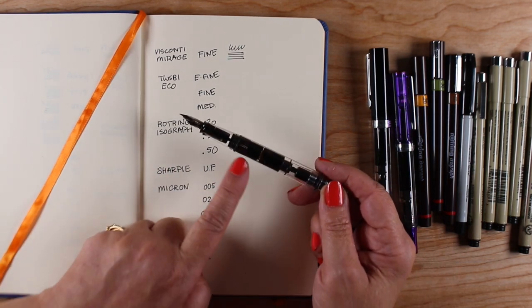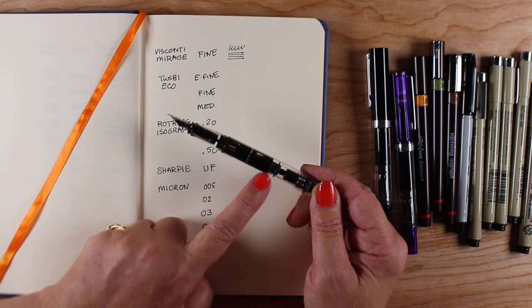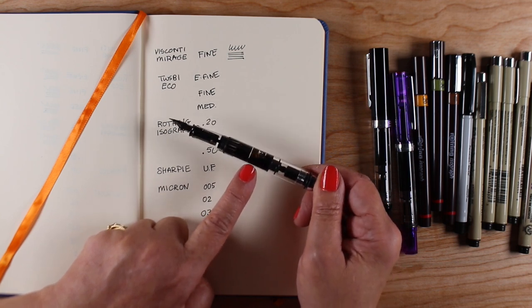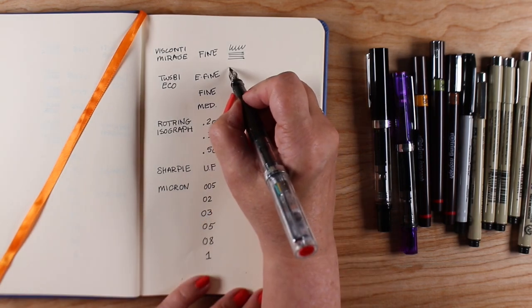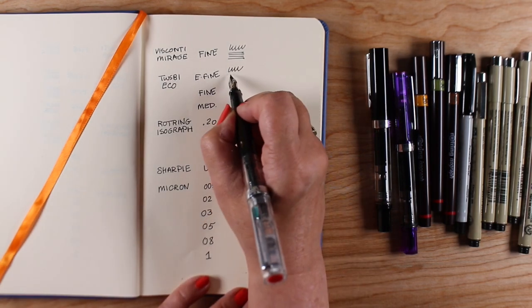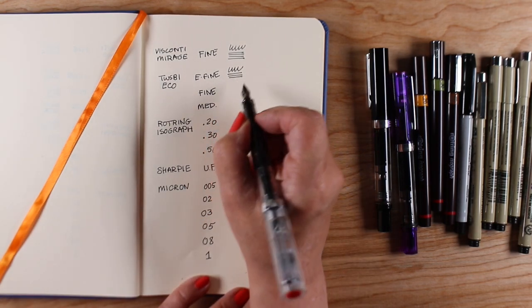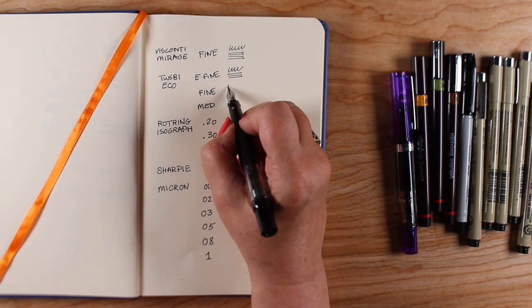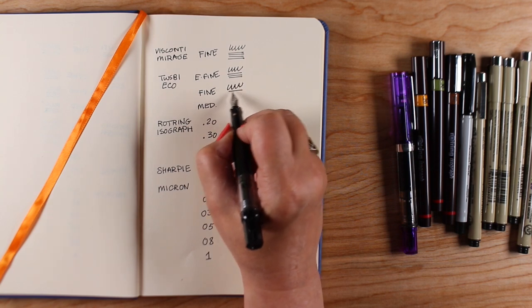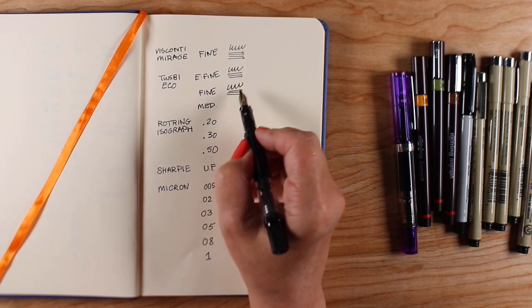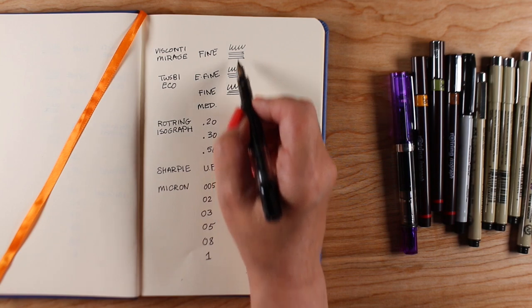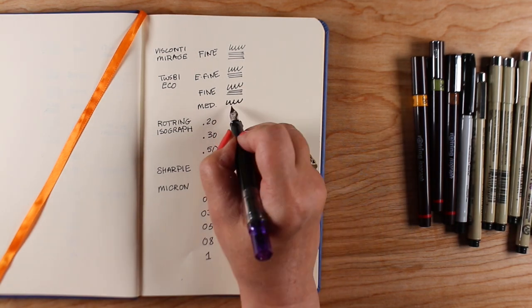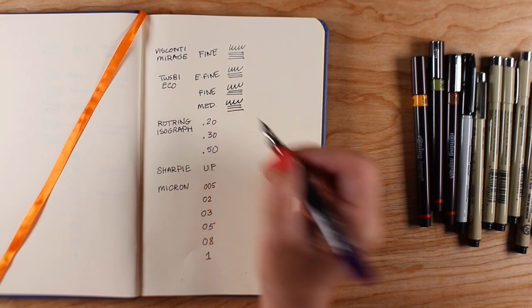The Twisby Eco though is what I recommend. I love these pens. I love how they write. I love the clear body so you can see how much ink is in them. There's just a lot of things about them for being a really reasonably priced pen that I think is really well worth recommending, but the extra fine Twisby Eco is thicker than my Visconti Fine. Amazing! So even the fine of the Twisby Eco is thicker still and then the medium is thicker still.